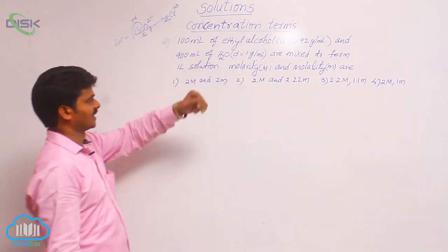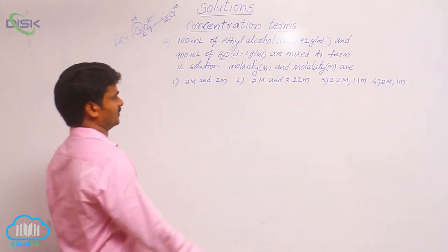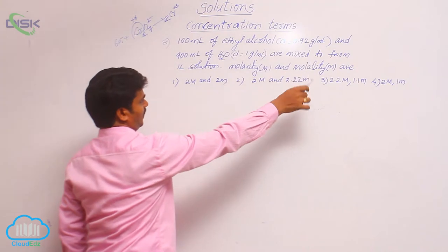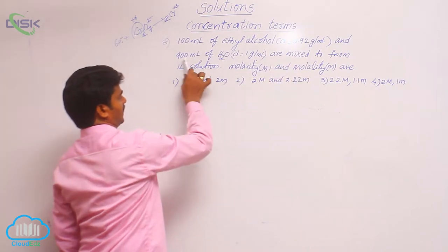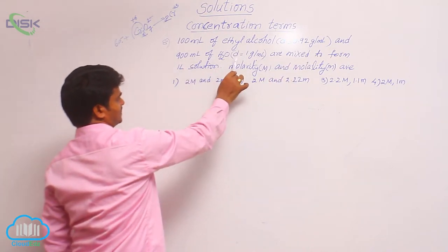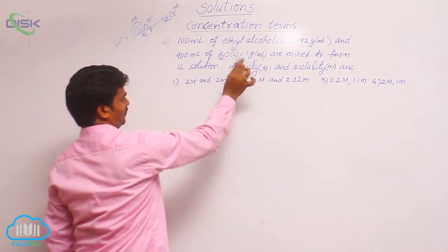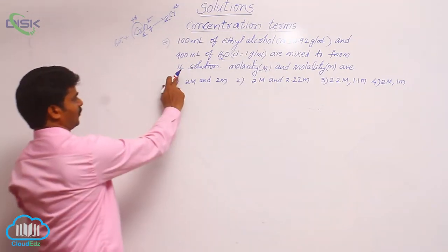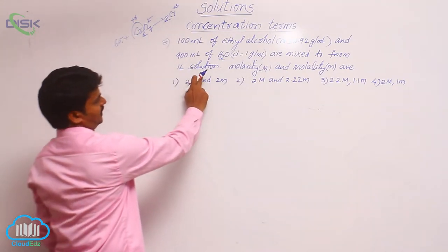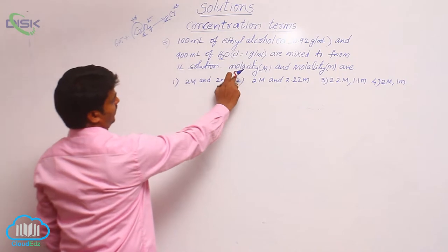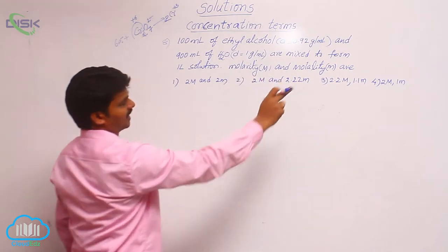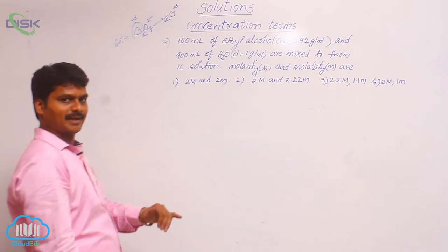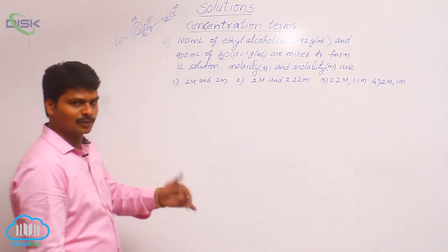100 ml of ethyl alcohol with density 0.92 grams per ml and 900 ml of water with density 1 gram per ml are mixed to form a 1 liter solution. The question asks: what are the molarity and molality? Both molarity and molality need to be determined.